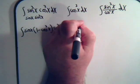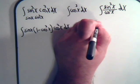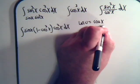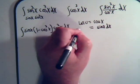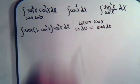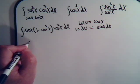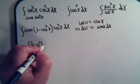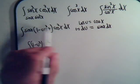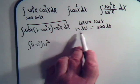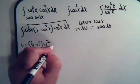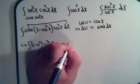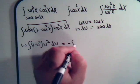So we let u equal the cosine of x. The derivative gives us minus sine of x dx, so multiplying both sides by minus 1, the integral becomes the integral of (1 minus u squared) times u squared, and sine of x dx becomes minus du. So this becomes minus the integral of (u squared minus u to the fourth) du.